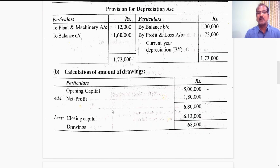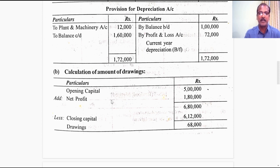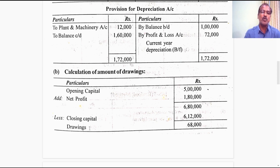Now we make an attempt to calculate the missing figure with regard to capital. For a sole proprietary concern, it is always good to prepare a statement to find out the amount of drawings or additional capital introduced. Opening capital given in the problem is 5,00,000; adding the net profit of 1,80,000 gives 6,80,000. Deducting the closing capital, the missing figure of 68,000 is assumed to be drawings made by the proprietor. This drawing is a cash outflow recorded under financing activities.